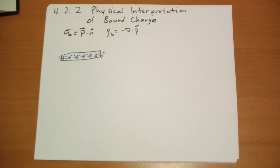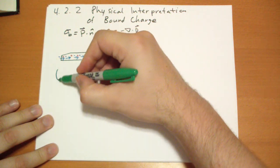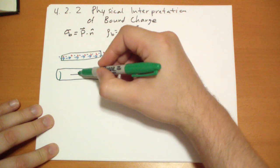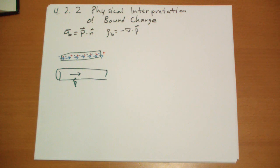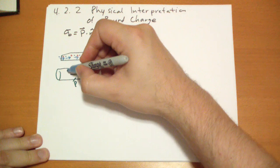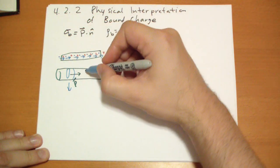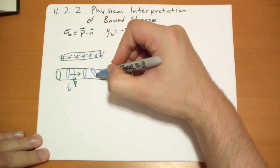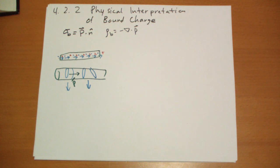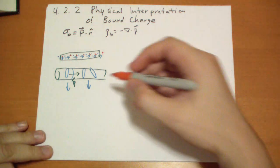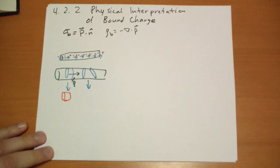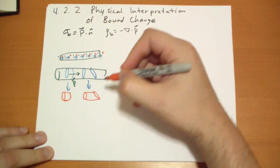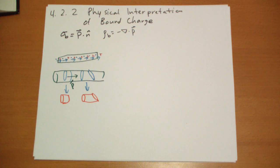He extrapolates that and talks about if you have a polarized tube, polarized in this direction — big P. If you take any cross-section of this, one cross-section flat and another cut at an angle, this behaves just like the dipole chain except in three dimensions. You get a net negative charge on one end and a net positive charge on the other, as you'd expect.